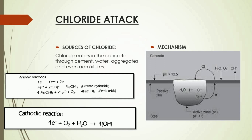Chloride enters concrete through cement, water, aggregates, and even emissions. When a small part of the passive film gets deteriorated, a small pit is formed which is called the anode, while the other region of the passive film is called the cathode. The anode gets filled with an electrolyte such as water, and ferrous ions are present in this electrolyte.